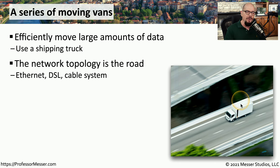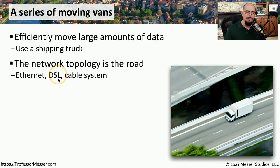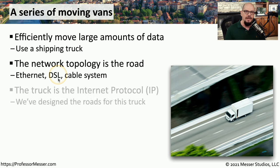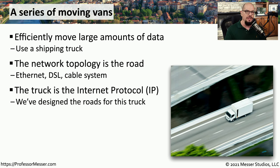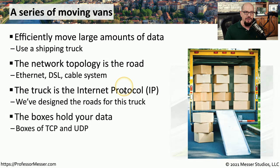We need to have some type of road for this moving van to ride on. Our roads are effectively our ethernet networks, our cable networks, our DSL networks, and other types of wide area and local area connections. The truck that we put on these electronic roads is IP, or the internet protocol.